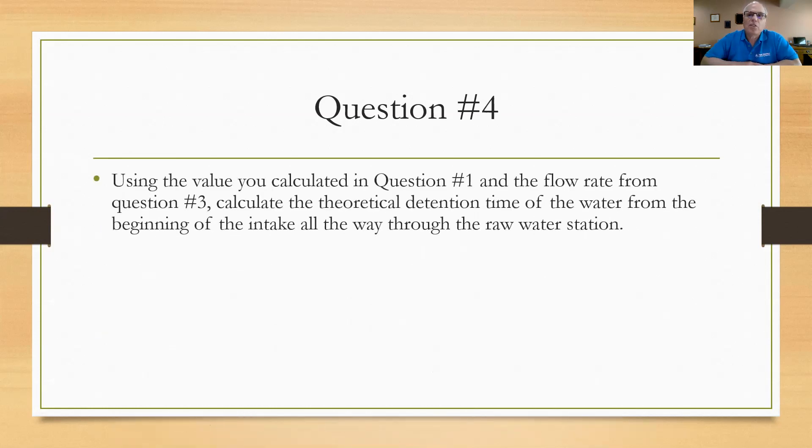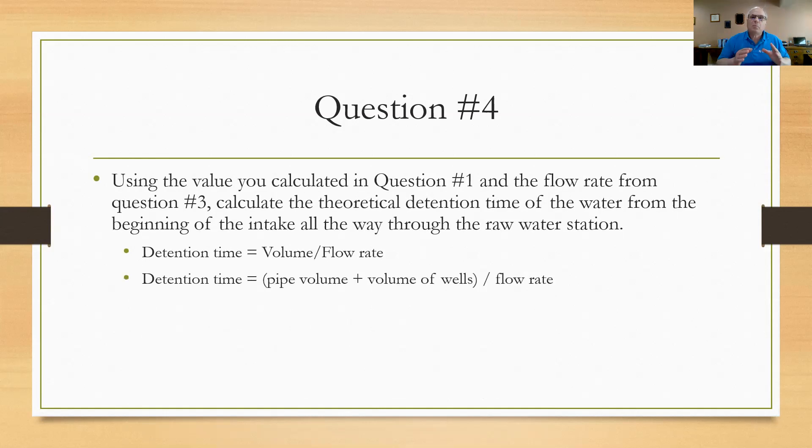Using the value calculated in question number one and the flow rate from question number three, calculate the theoretical detention time of the water from the beginning of the intake all the way through to the raw water station. So now we've calculated some of that already from some of the problems. We've got to go check question number one and question number three to get these pieces of information. We know the detention time is going to be the volume divided by the flow rate. So to get the volume we're going to have to calculate the pipe volume and add it to the volume of the wells which we already calculated in another question. It'll give us a total volume of the wells plus the pipe and we divide that by the flow rate.